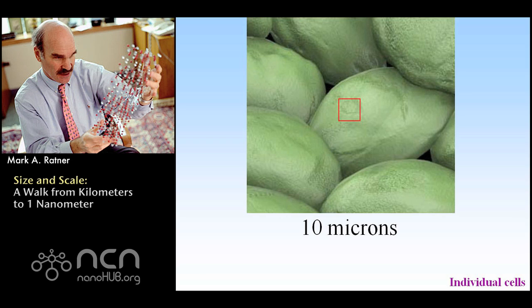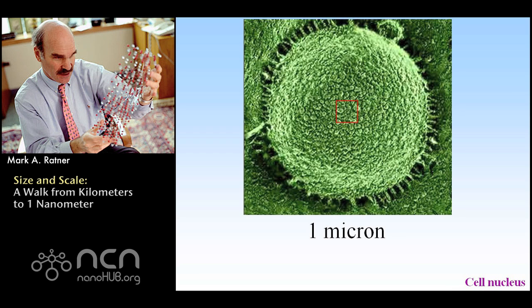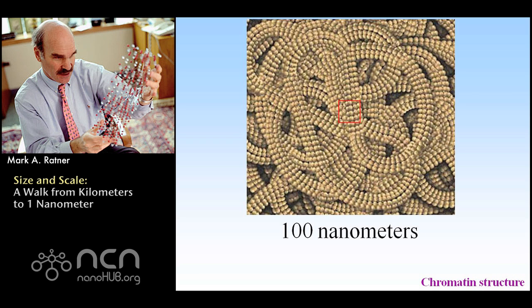Down to one micron — the nucleus of a cell. The nanoscale is normally defined as lying between a hundred nanometers, which is the structure of chromatin, and one nanometer. This factor of a hundred is, by the definition of the marketplace, what we normally think of as the nanoscale.